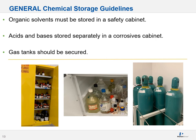I want to provide some general chemical storage guidelines. Organic solvents must be stored in a safety cabinet — by nature they're volatile, can be explosive, and can be quite toxic if fumes are released. Store them in a safety cabinet, preferably one that's vented. Acids and bases must be stored separately in a corrosives or equivalent cabinet. You don't want explosive organics and something with high potential energy like an acid and a base next to each other.